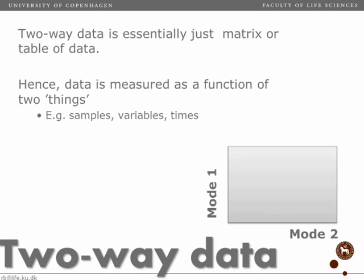Before we start talking about the model, we have to talk about the data. Normally, we're used to working with two-way data, and if you have two-way data, you have a matrix where in one mode you would typically have the samples and in the other mode you would typically have the variables. Inside the matrix, you would have the actual values — for example, if you do spectroscopy, you would have absorbances. That means we are measuring absorbance as a function of two different things: samples and variables, or wavelengths.